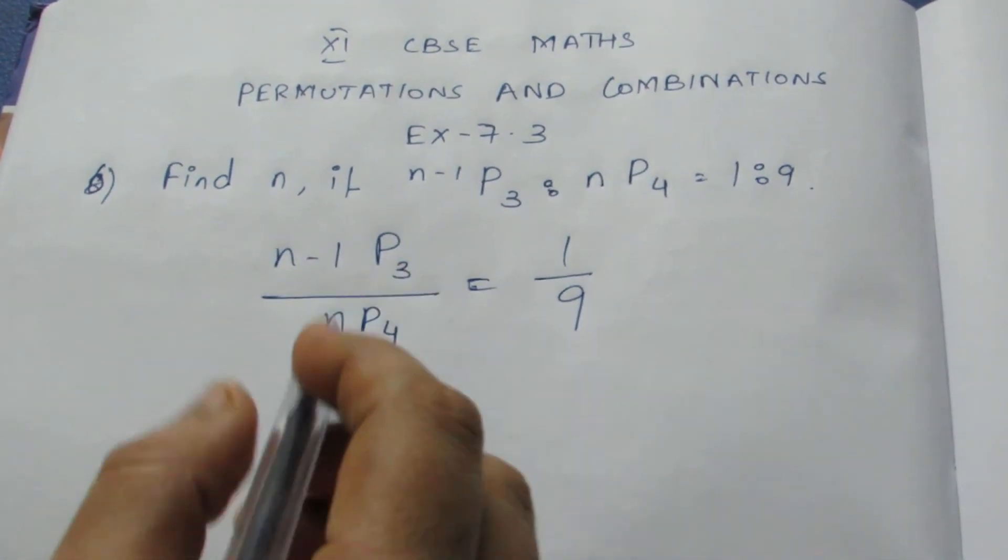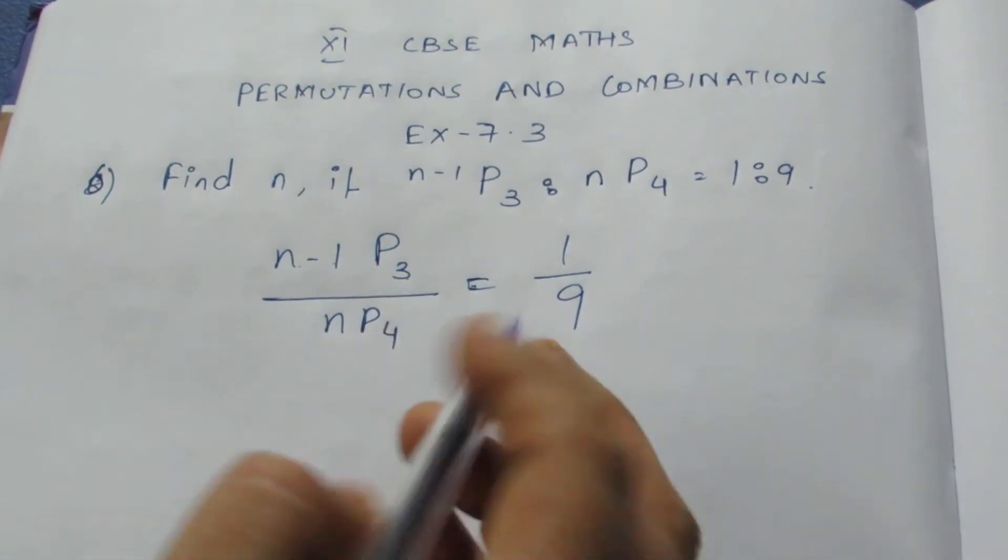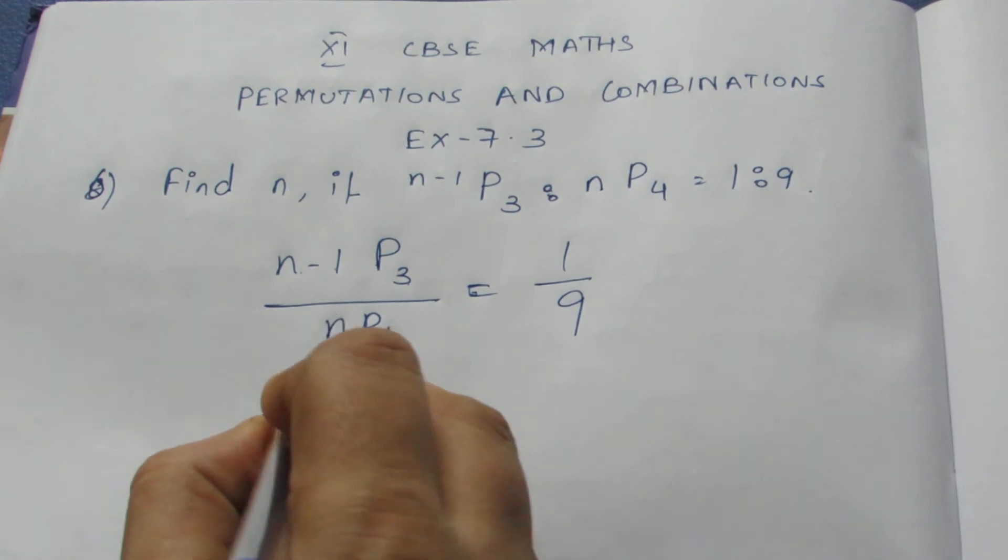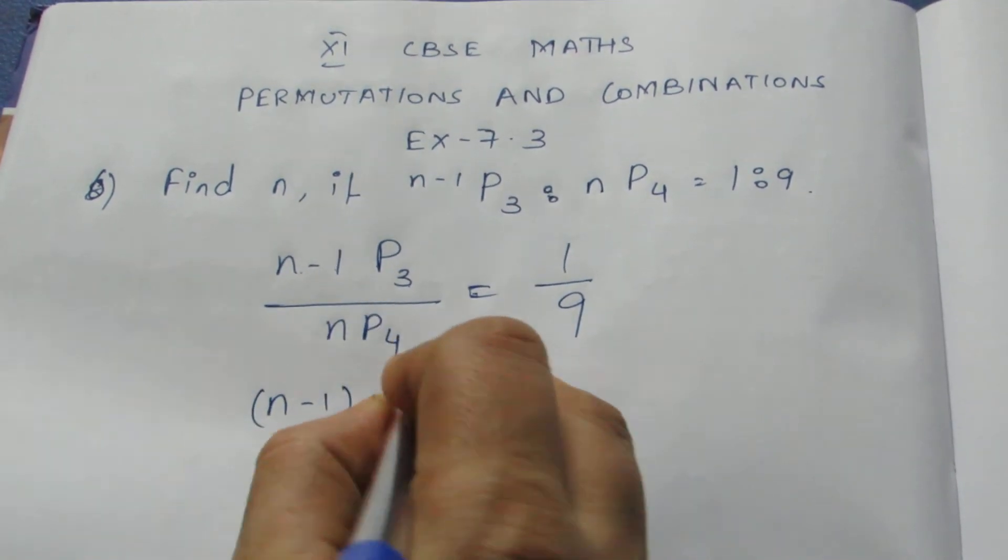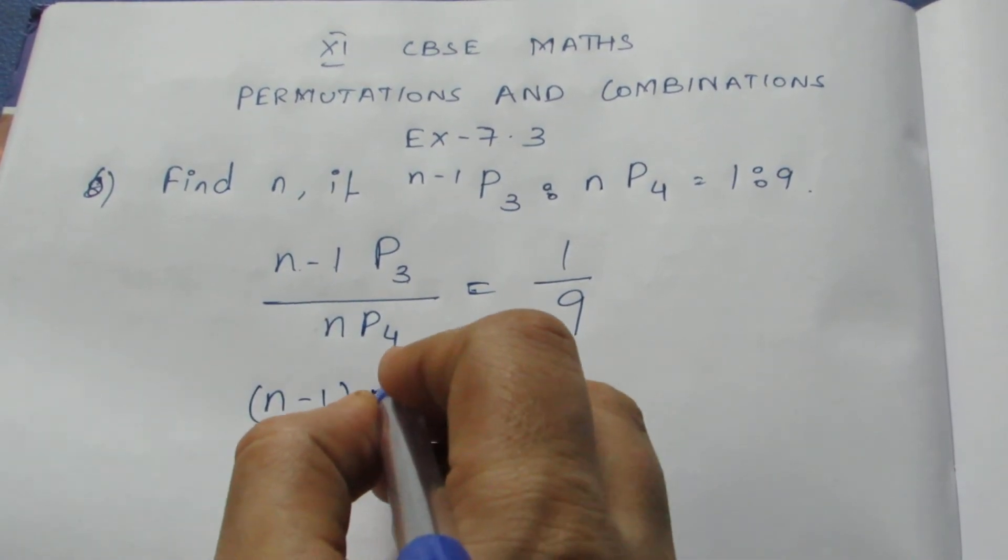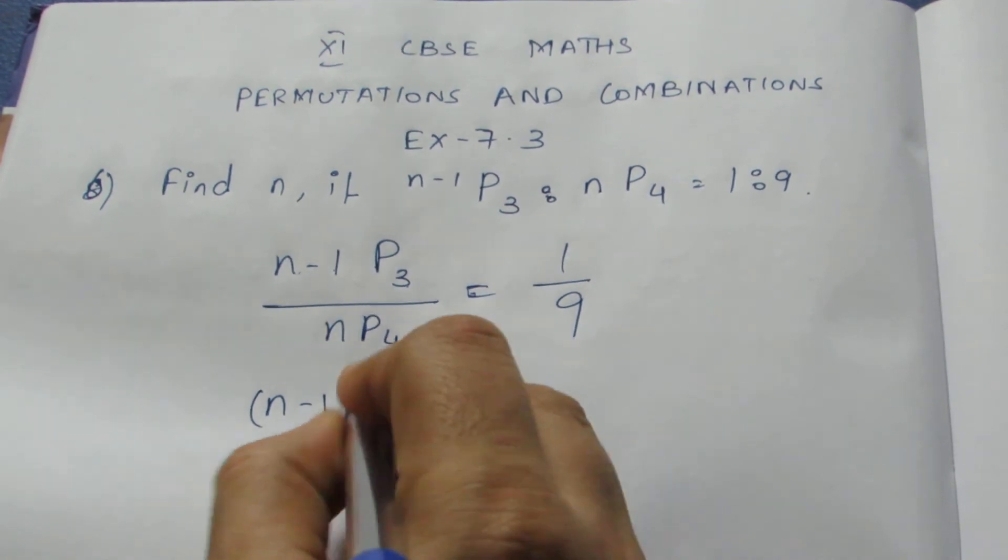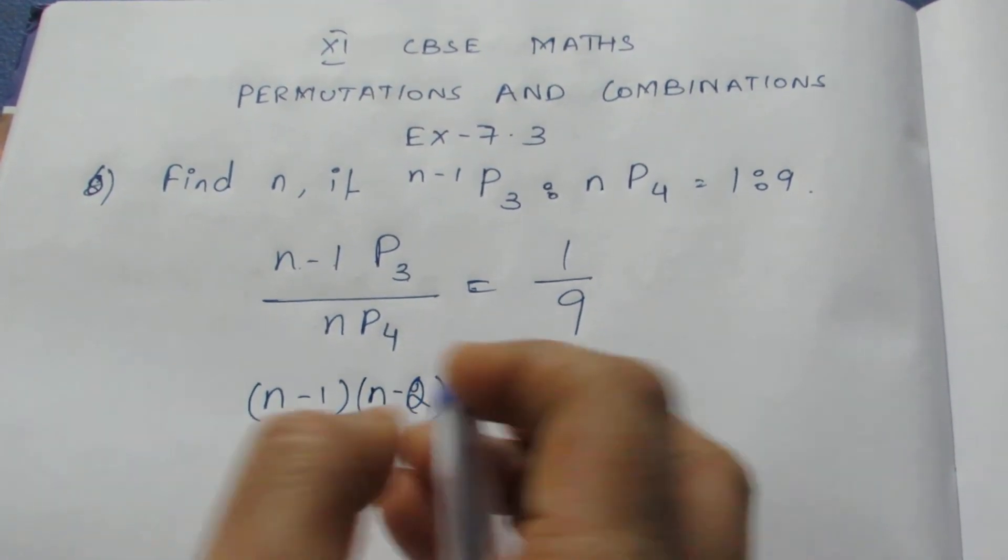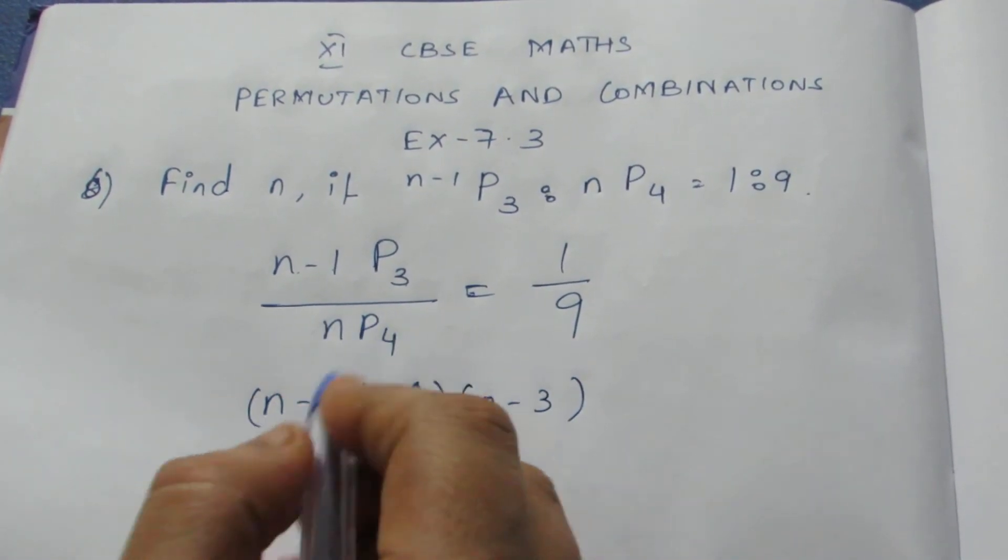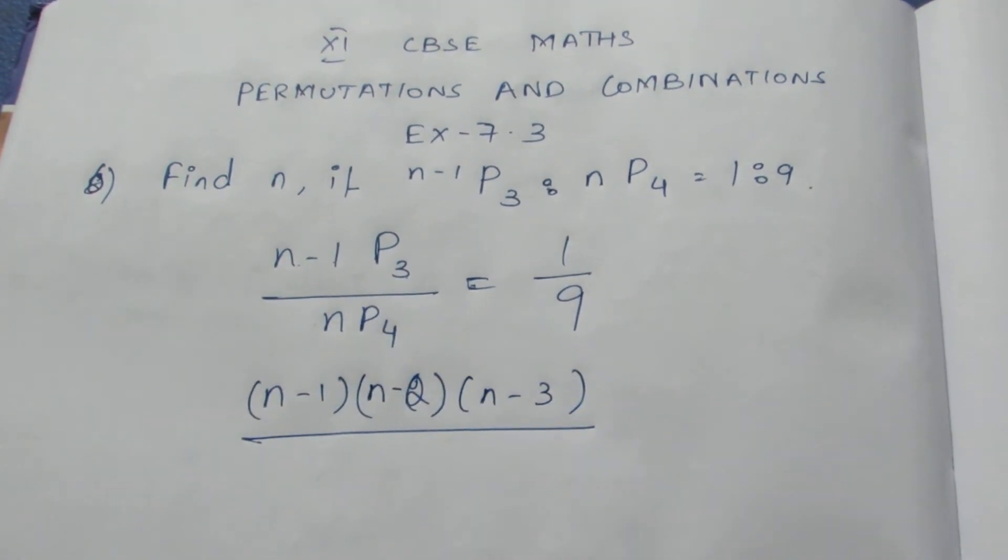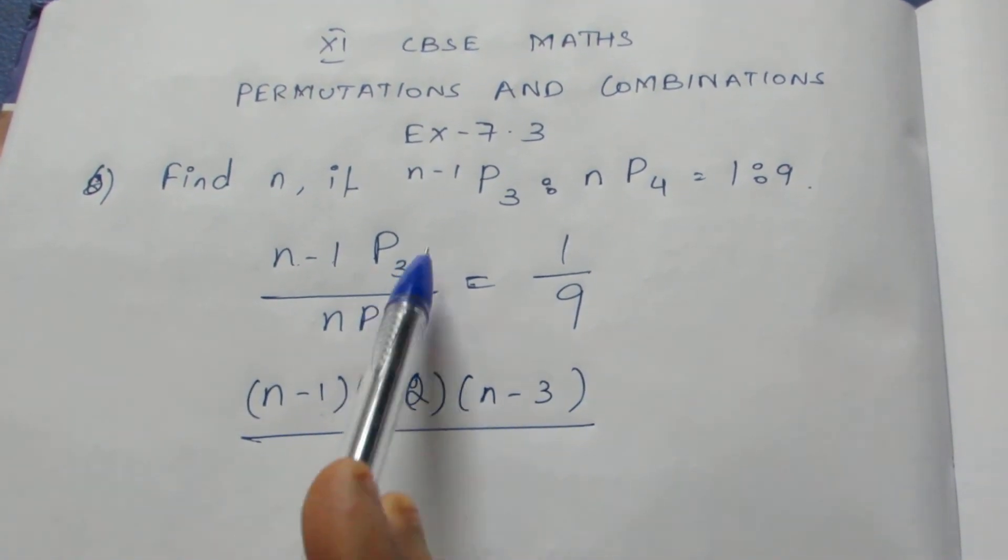I'm going to expand this permutation. N minus 1 P3 means N minus 1 into N minus 2 into N minus 3. In descending order, we write 3 numbers because 3 is here.